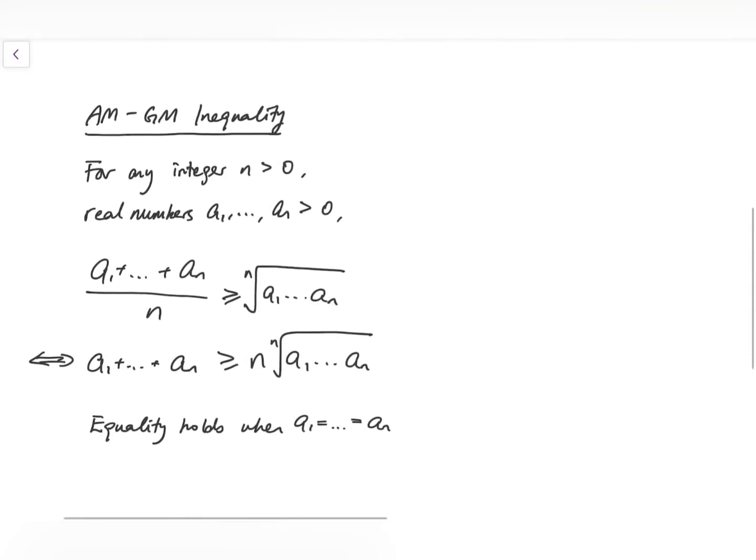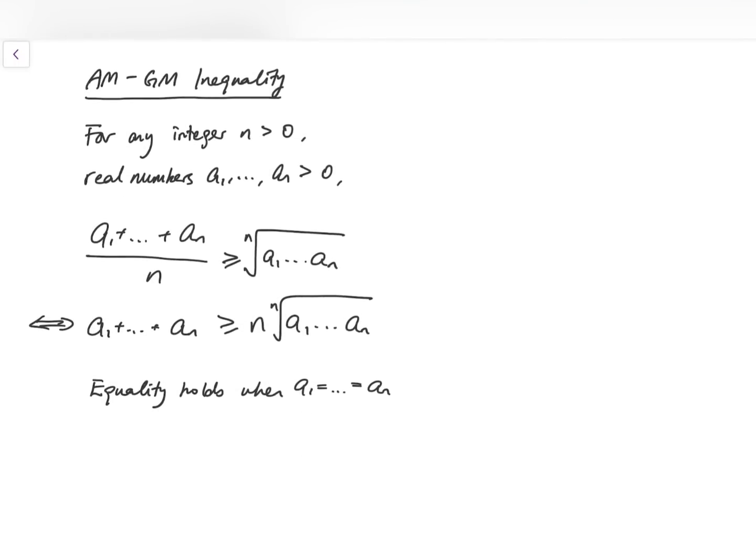To do this, I'm going to use the AM-GM inequality, which says that for any natural number n, and any given n positive real numbers, I call them a1, a2, up to an, then the arithmetic mean